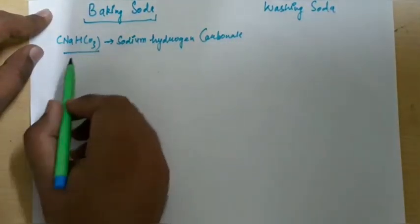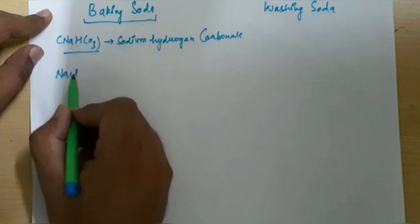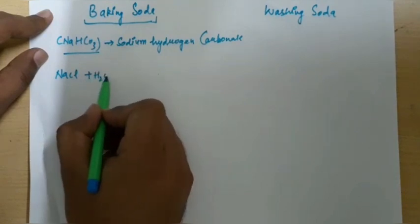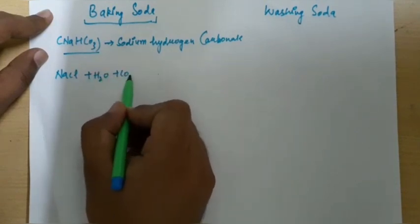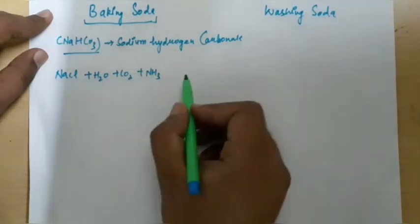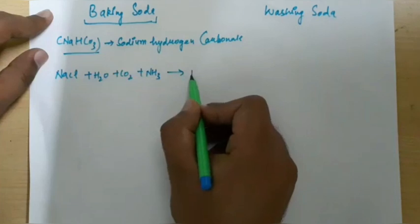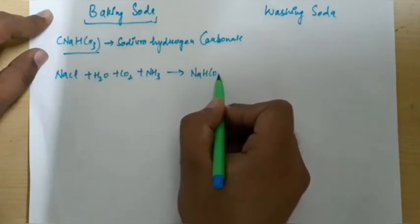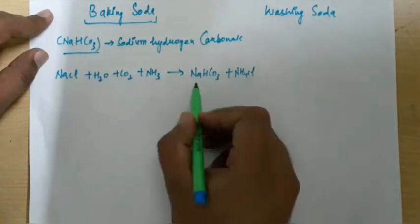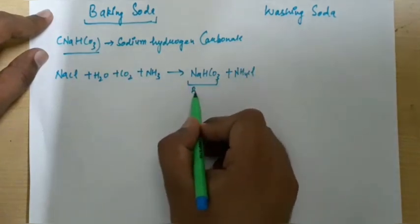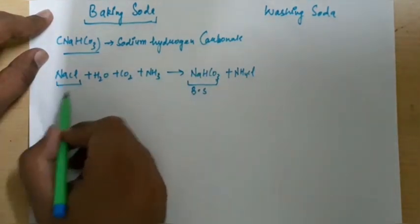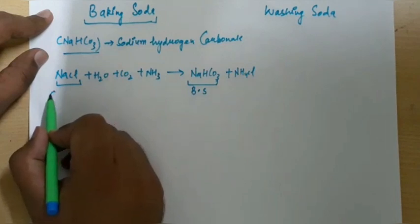So let us see how it is prepared. When NaCl reacts with H2O plus CO2 plus ammonia that is NH3, then it forms NaHCO3 that is baking soda plus NH4Cl is formed. Here important point to note that this is prepared from NaCl that is common salt.